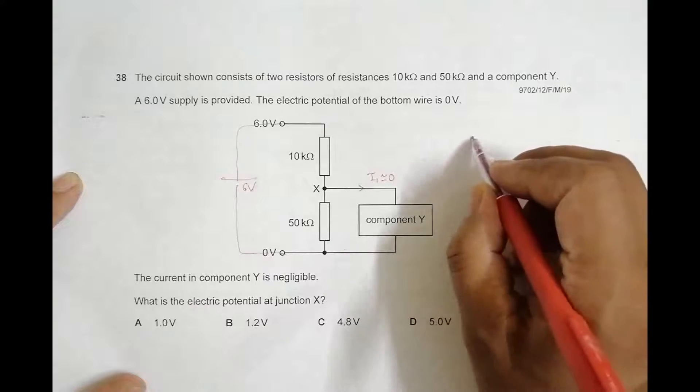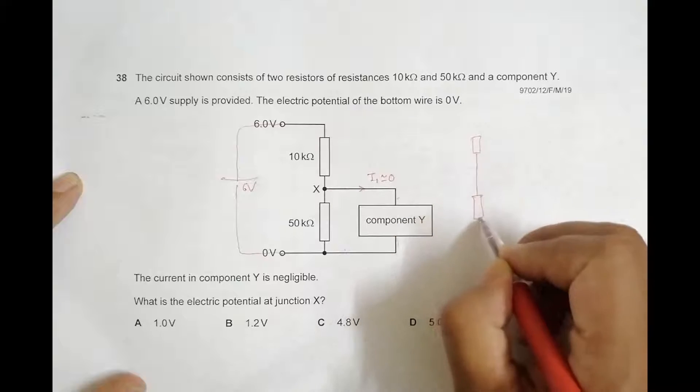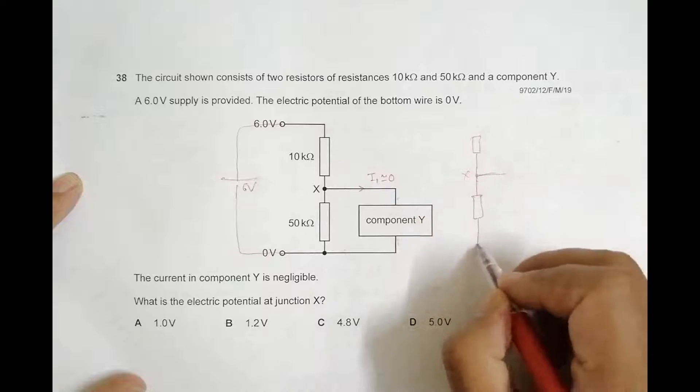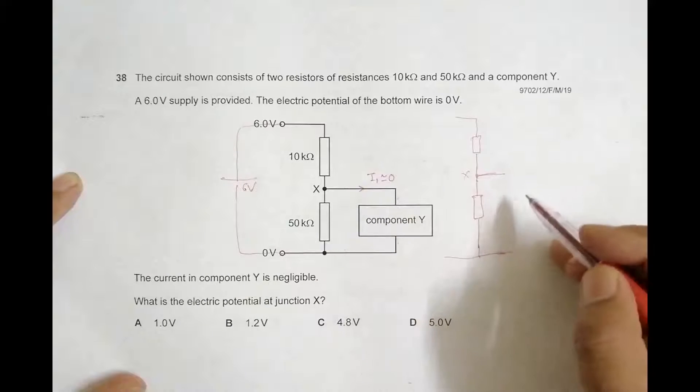We have got this 10 kilo-ohm here, then we have got this 50 kilo-ohm here. So we have got this wire here, which is just open. This wire is just open, meaning the resistance here is infinite.